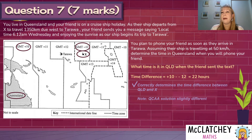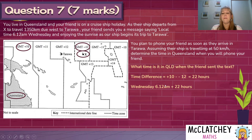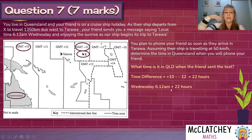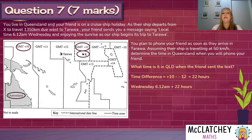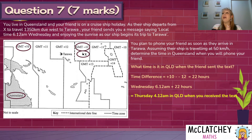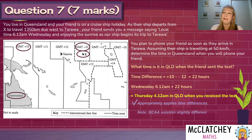Now I take the friend's local time — Wednesday 6:12am — and add 22 hours. Queensland is almost a whole day ahead. Rather than counting hour by hour, a quick trick is to think of 22 hours as almost 24: go to Thursday 6:12am and subtract two hours. That gives Thursday 4:12am in Queensland when that text was received. That answers our first question, and we've earned two of our seven marks for correctly working out the time difference and applying it.